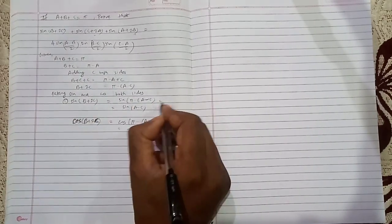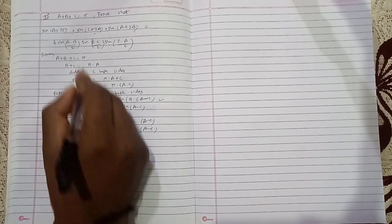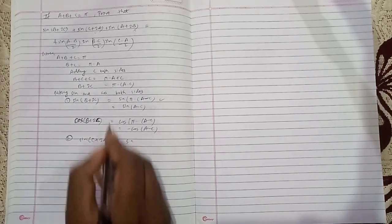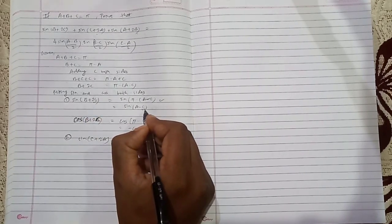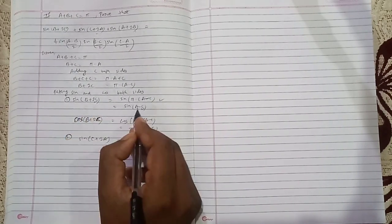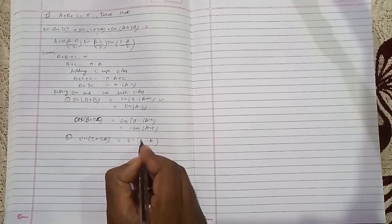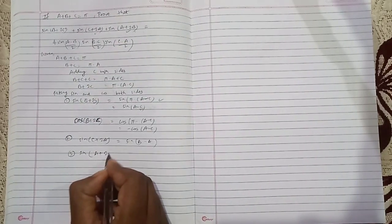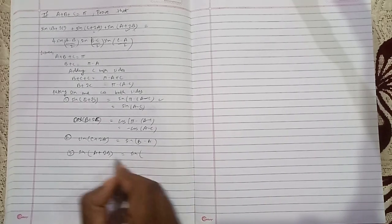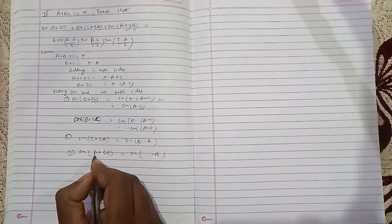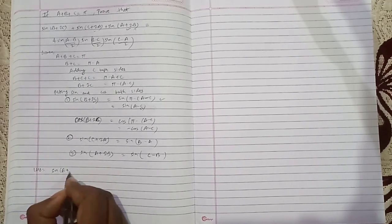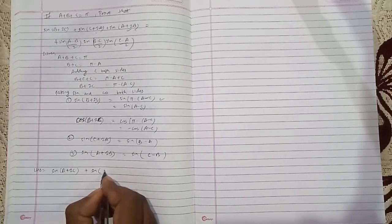Similarly, we can find sin(c+2a) and sin(a+2b). For sin(c+2a): if there is 2a we write minus a, and if there is c and a we write b — so sin(c+2a) equals sin(b minus a). For sin(a+2b): if there is 2b we write minus b, and if there is a and b we write c — so sin(a+2b) equals sin(c minus b).